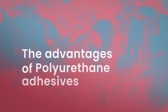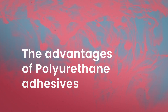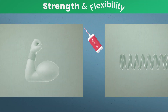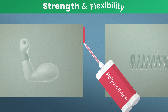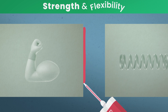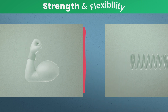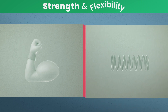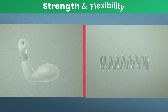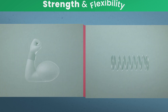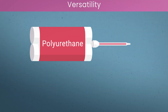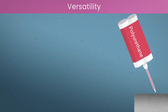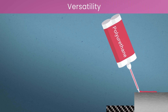Let's see the advantages of polyurethane adhesives. Polyurethane adhesives combine strength and flexibility. They can perform very well in an application that needs to bond heavy materials as well as withstand heavy movement. Polyurethanes can form strong and durable bonds to a wide range of materials.